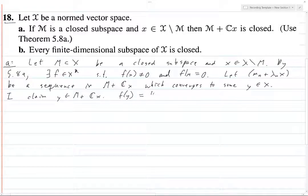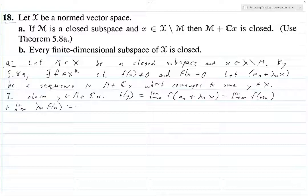Since F is continuous, F of y is the limit of F of M_N plus λ_N x, and by linearity this is the limit as N goes to infinity of F of M_N plus the limit as N goes to infinity of λ_N F of x. Let's see, F restricted to M is zero, so each F of M_N is zero, and so this is a limit of a whole bunch of things in M.